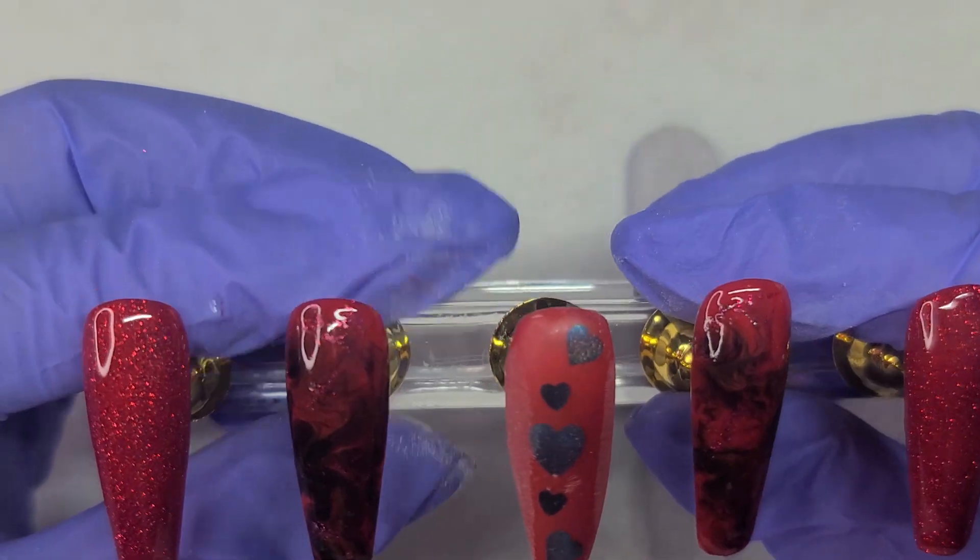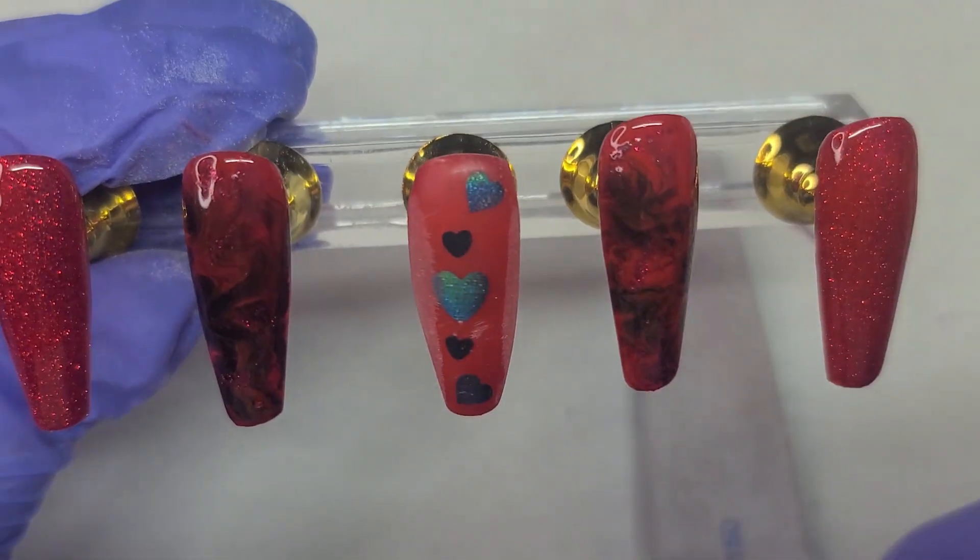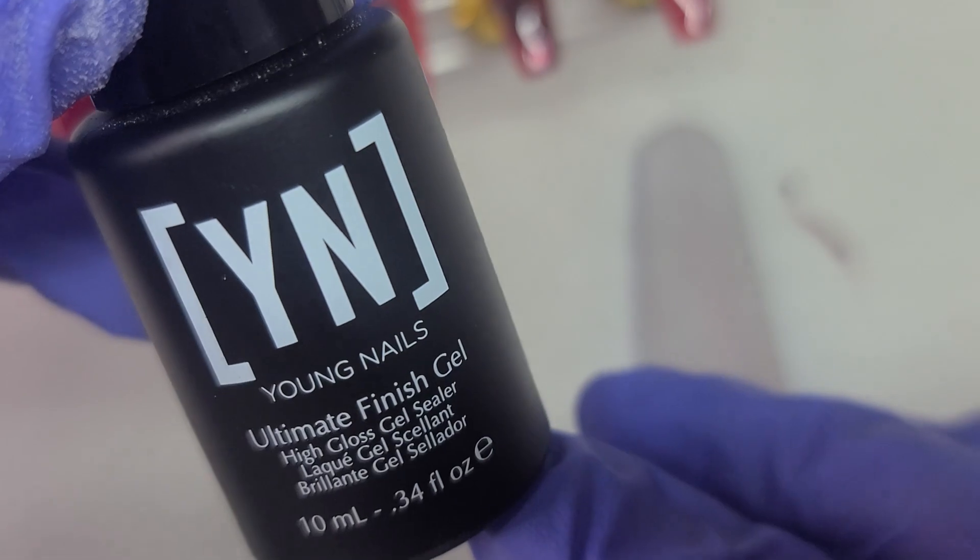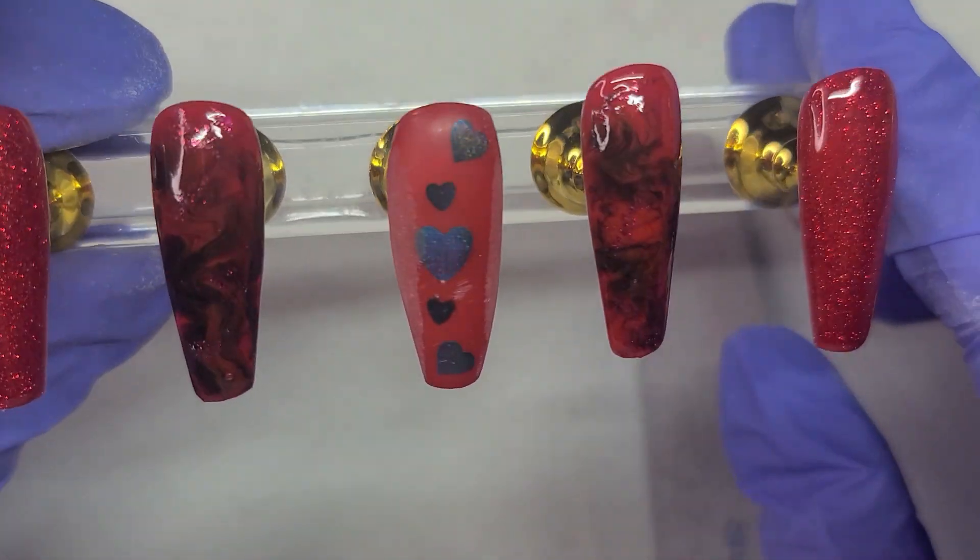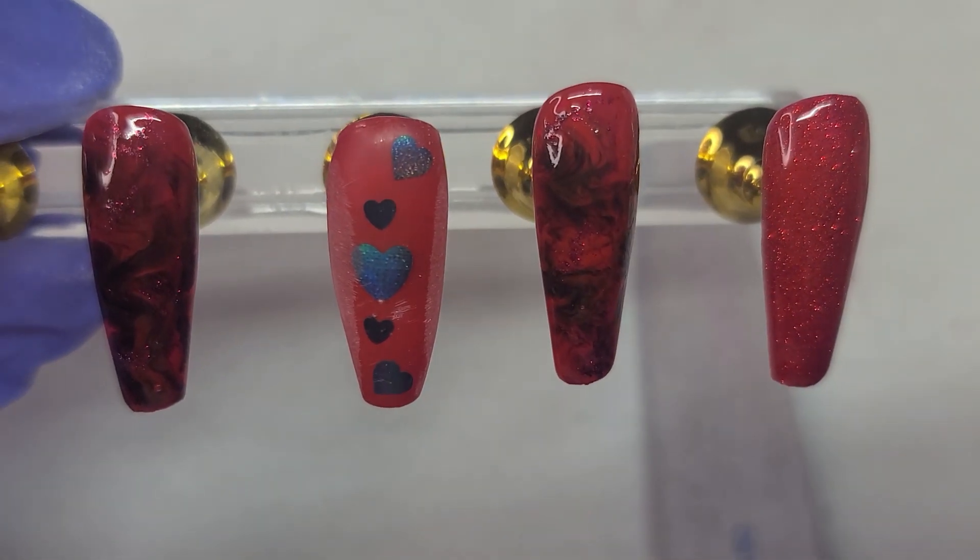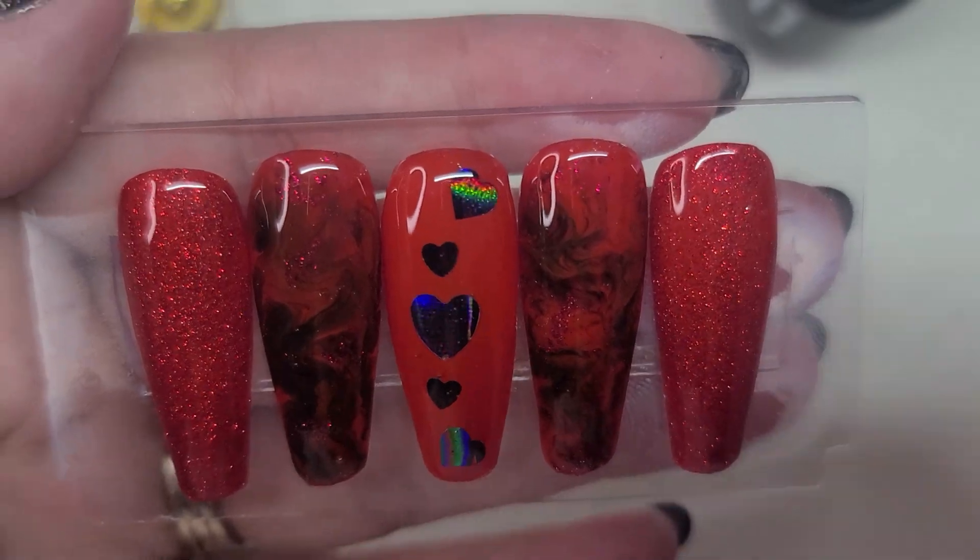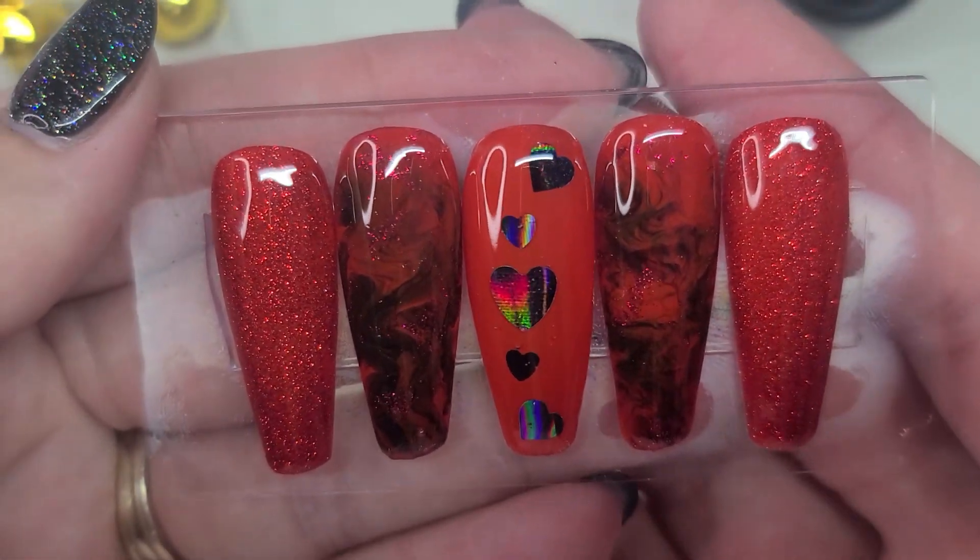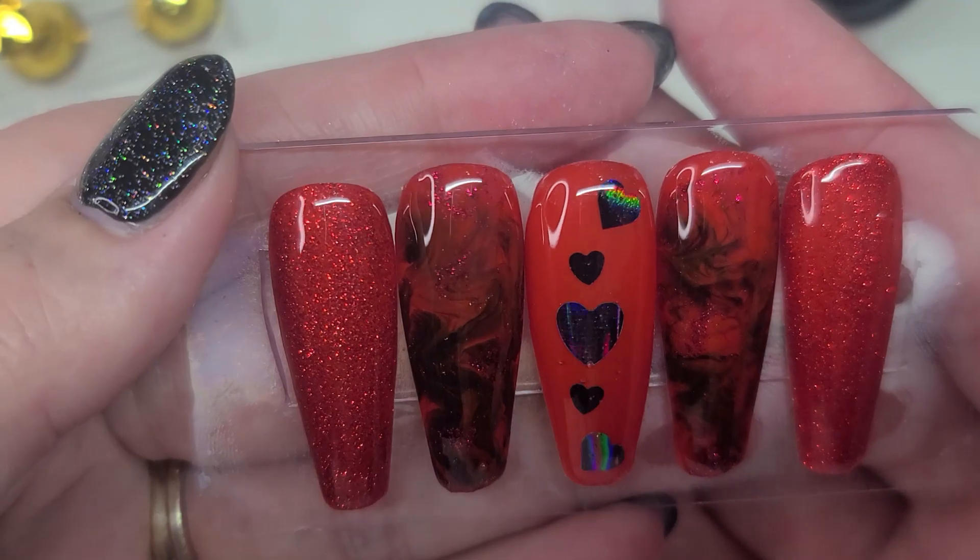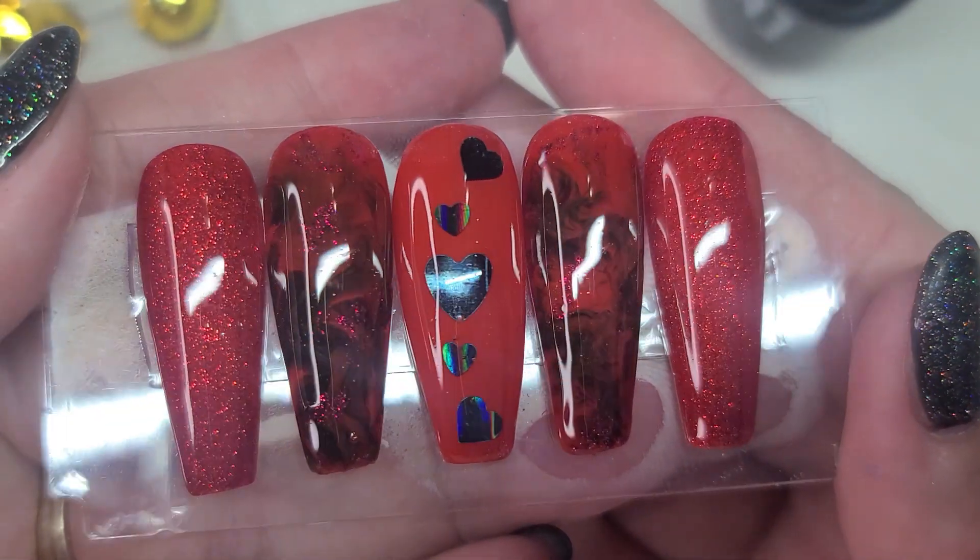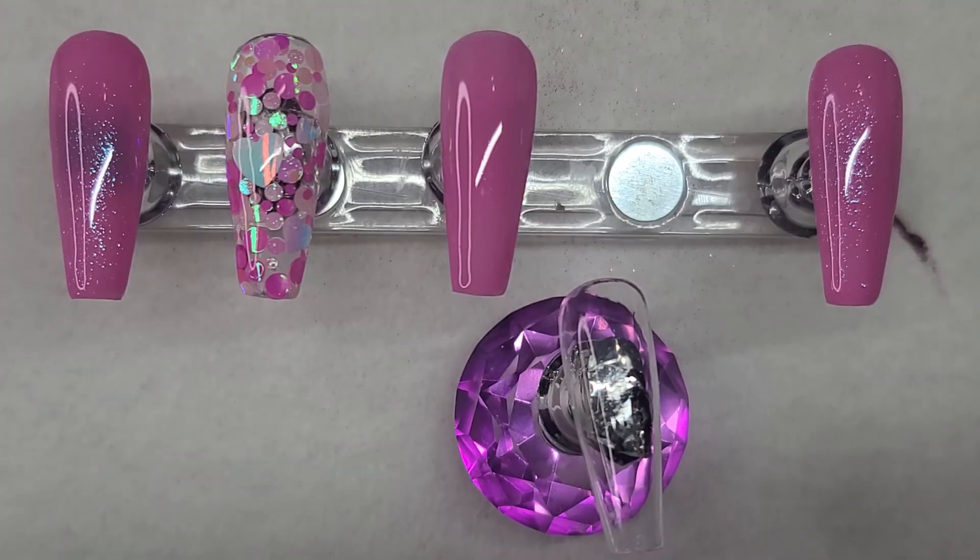There's our whole set. I'm going to go in and top coat all of these. And the top coat I'm using is the Ultimate Finish from Young Nails. I'm going to go ahead and top coat all these. Cure them in the light for 60 seconds. And then I'll come back with the finished result. Alright, you guys. So this is the finished result on the traditional red Valentine's Day nails. I think they turned out so good. I love the marbling in there.